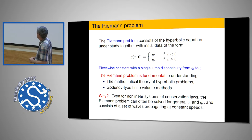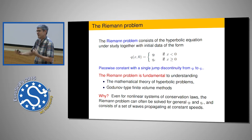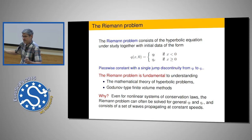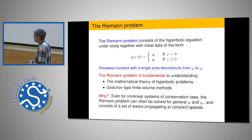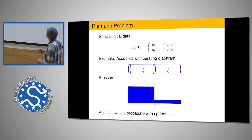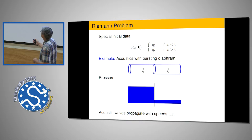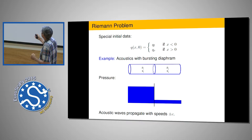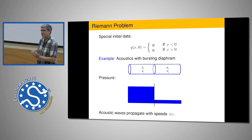There's a class of methods called Godunov-type finite volume methods. Godunov was working in the Soviet Union in the 1950s and developed the first method of this sort, based on solving Riemann problems to develop solutions to more general initial data. Here's a Riemann problem for the acoustics equations in 1D: you have two variables, pressure and velocity. A shock tube problem has gas at two different pressures with zero velocity and a membrane separating them. When you break the membrane, what happens?